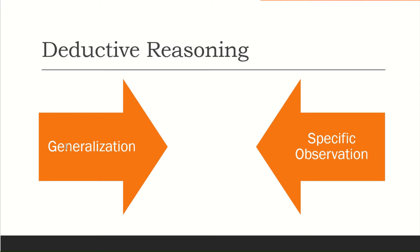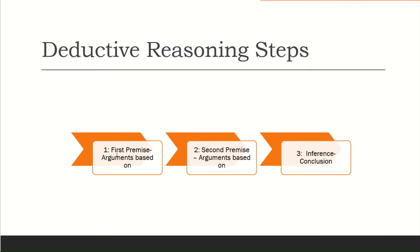It goes from what we call a general concept to a specific concept. The deductive reasoning process has three steps. The first is the premise — the argument on which the conclusion is based. The second premise is based on the argument's discussion. These two premises together relate to the conclusion.